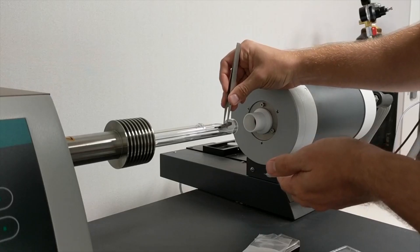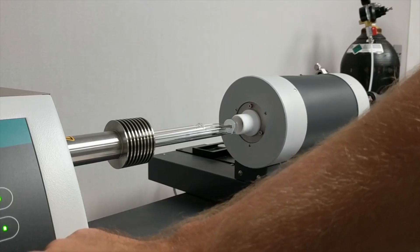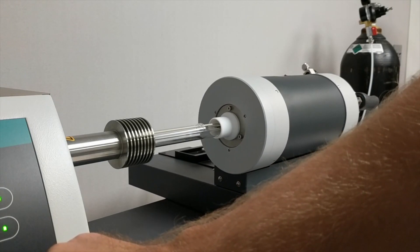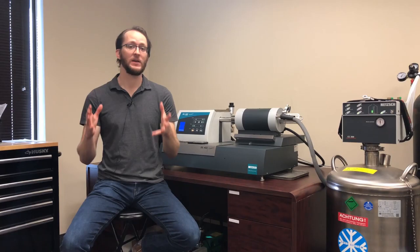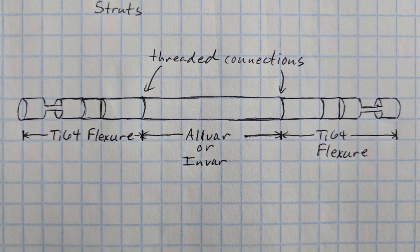We need to work with specific optics customers to prove our Allvar Alloy technology in their specific applications. We have a NASA SBIR Phase 2 just for building a prototype for ultra stable optics applications in telescopes.